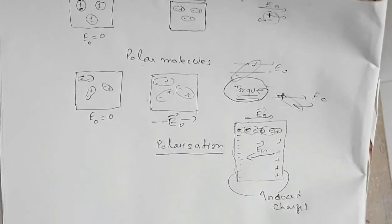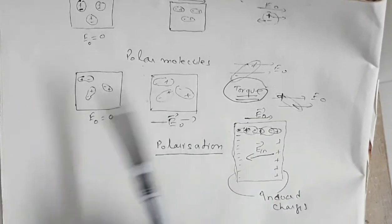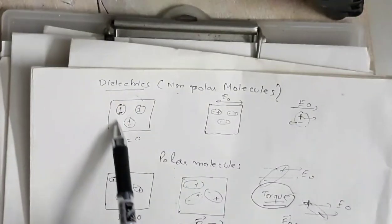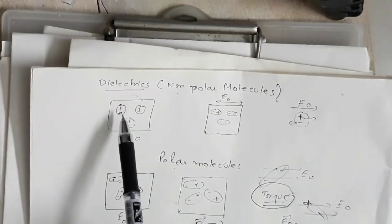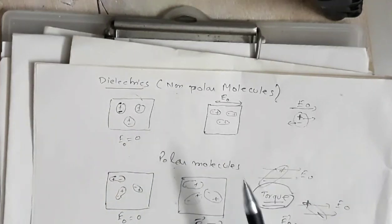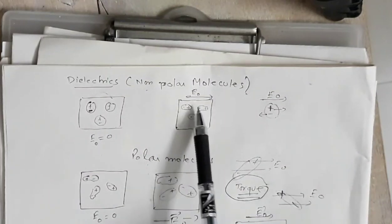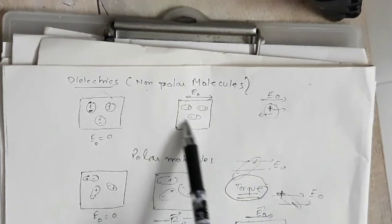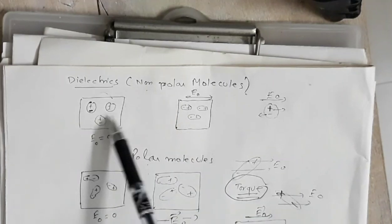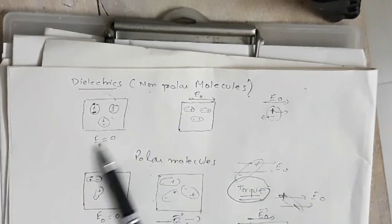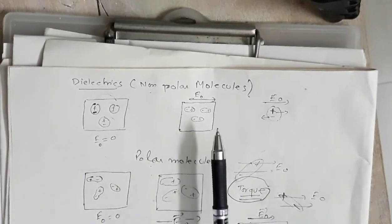This entire process — the appearance of charges on the two opposite surfaces of a dielectric material when it is subjected to an external electric field — is known as polarization. We can also understand polarization as the process by which individual molecules acquire a dipole moment and the material as a whole acquires a dipole moment in the presence of an external electric field.